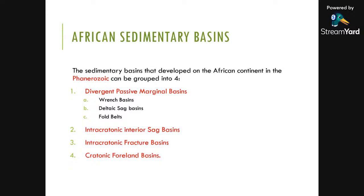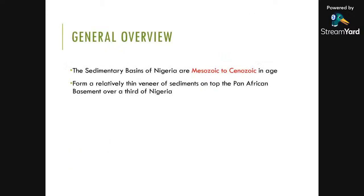We're going to put all of this in a regional context — the African context. The Nigerian sedimentary basins are African sedimentary basins that developed in the Phanerozoic, which is the eon after the Precambrian. The Phanerozoic basins that developed on the African continent can be grouped into four: Divergent Passive Marginal Basins (including Wrench, Delta-X-Sag, Fold Belt, etc.), Intracratonic Interior Sag Basins, Intracratonic Fracture Basins, and Cratonic Foreland Basins.